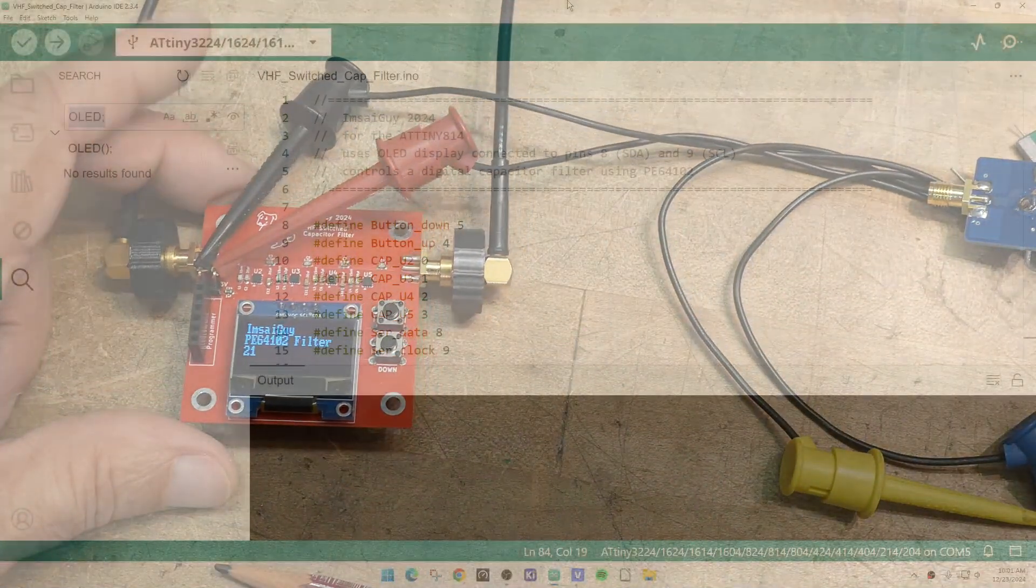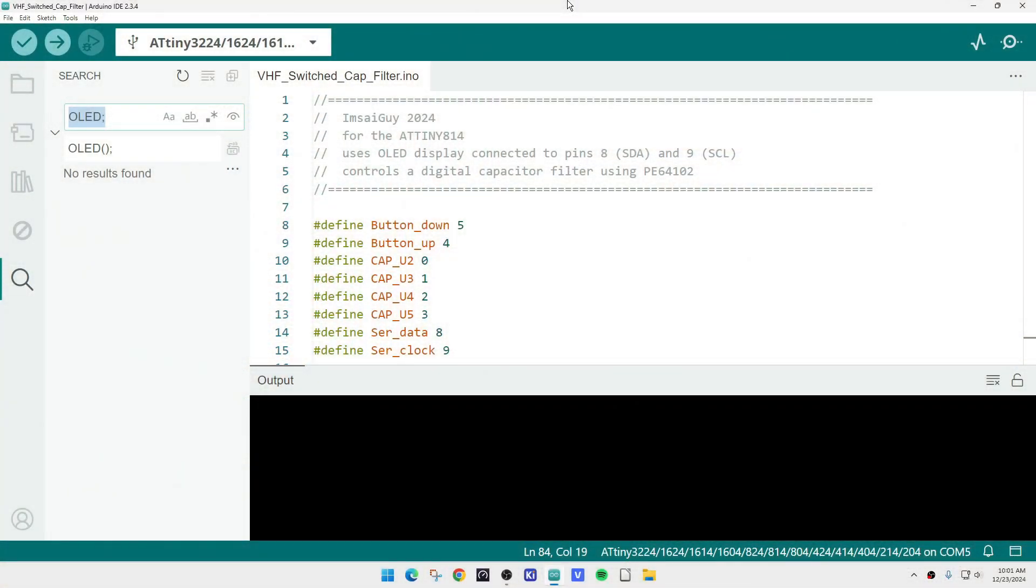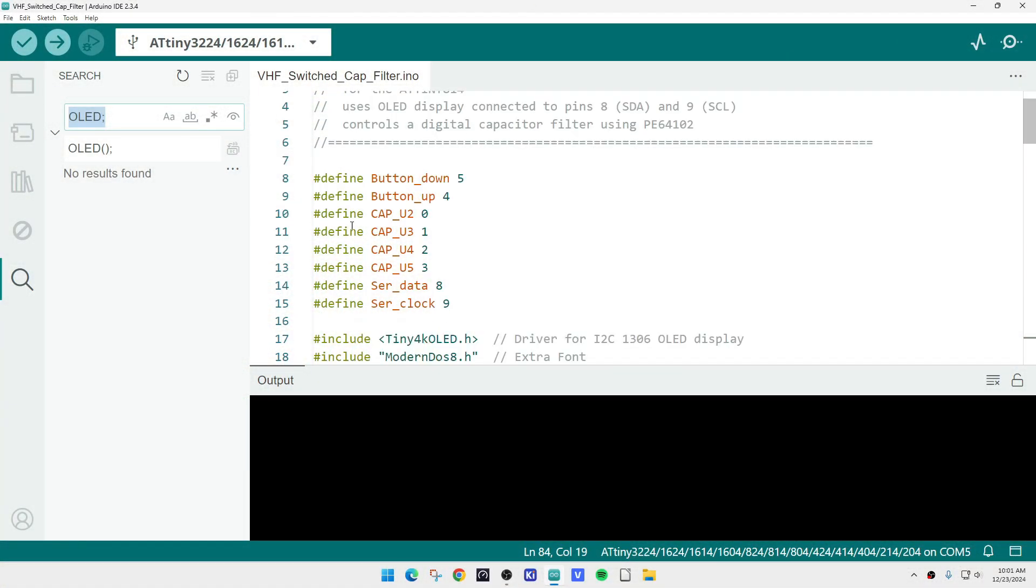Alright, let's look at the firmware here. We have two buttons, and for capacitor switch, capacitor program, I should say programmable capacitor filters, U2 through U5.